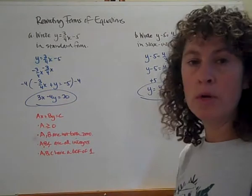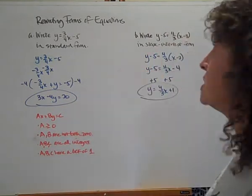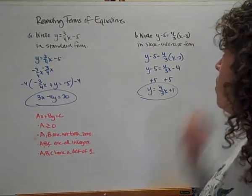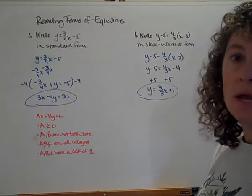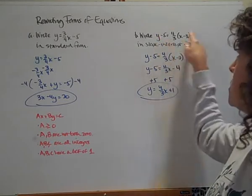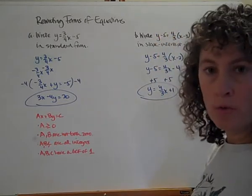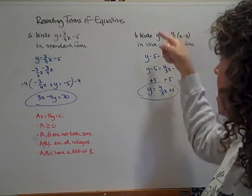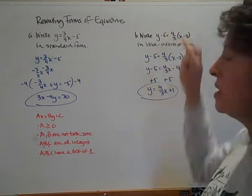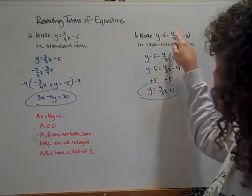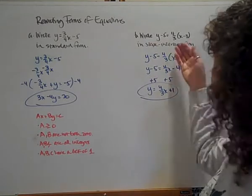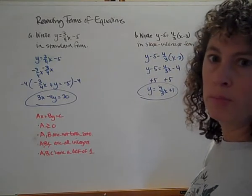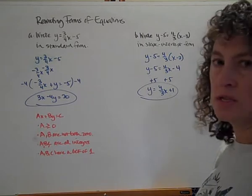This is our equation in standard form. Done. Let's take a look at b. Write y minus 5 equals 4 thirds in parentheses x minus 3 in slope-intercept form. So this is our point-slope form. This is one of the points on the line, and that's our slope. We're going to rewrite this in slope-intercept form, which is kind of our jeans and t-shirt, our basic go-to formula. I tend to go to that frequently.